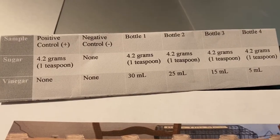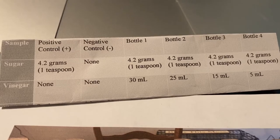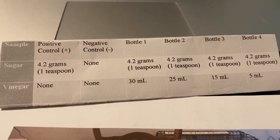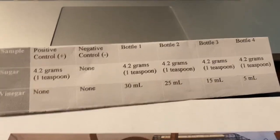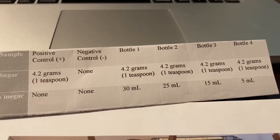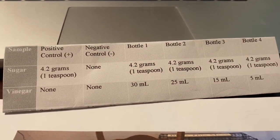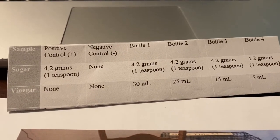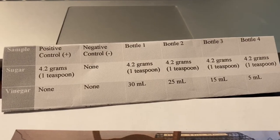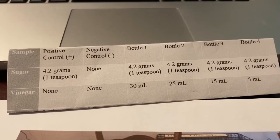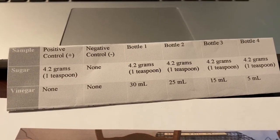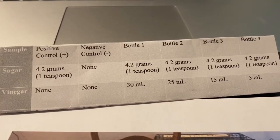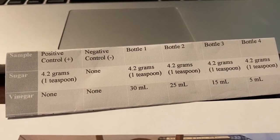Here I wanted to include a simple table of each of my samples and whether or not they included sugar or vinegar. From bottle one to bottle four, you can see that the level of vinegar descends and the remainder of solution in the bottle was warm water, totaling 60 milliliters. Bottle one had 30 milliliters of vinegar, the remainder was 30 milliliters of water, and so on for the rest of the bottles.